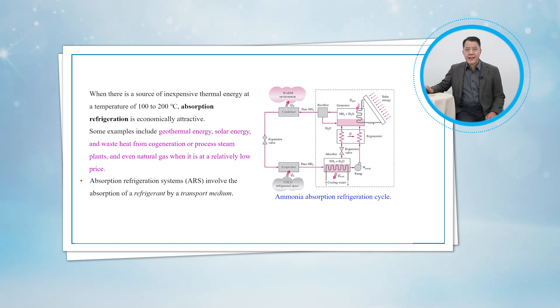As the name implies, absorption refrigeration systems involve the absorption of a refrigerant by a transport medium. The most widely used absorption refrigeration system is the ammonia-water system, where ammonia serves as a refrigerant and water as a transport medium.